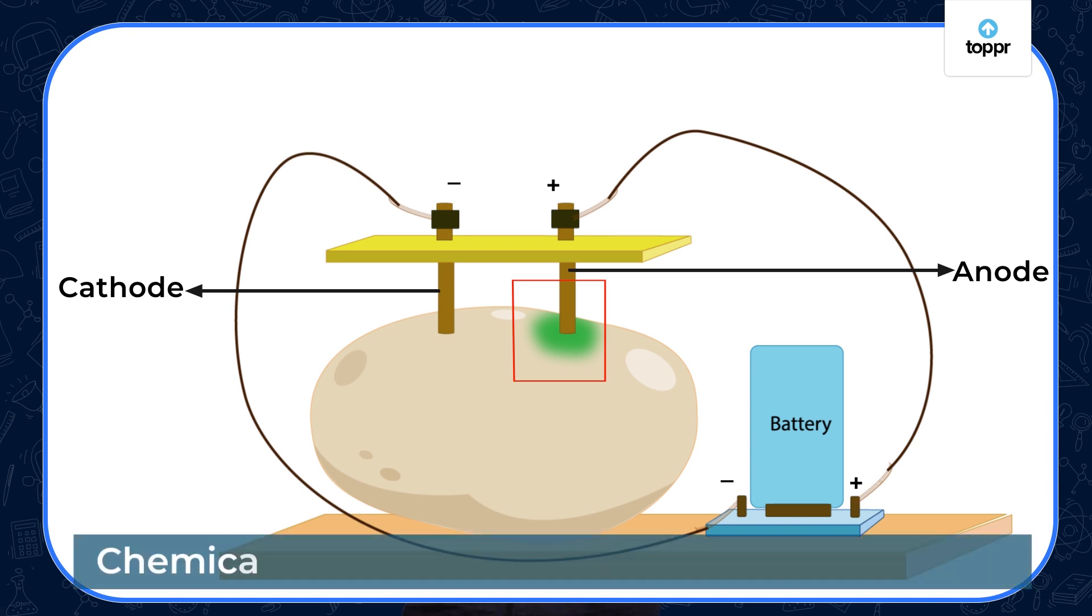Because the color of the potato is changing, we can say that some chemical reaction must be happening here. Try this activity on your own and verify the result.